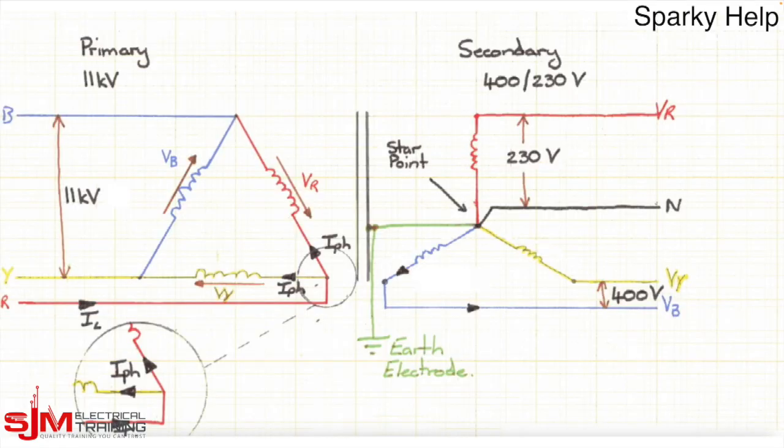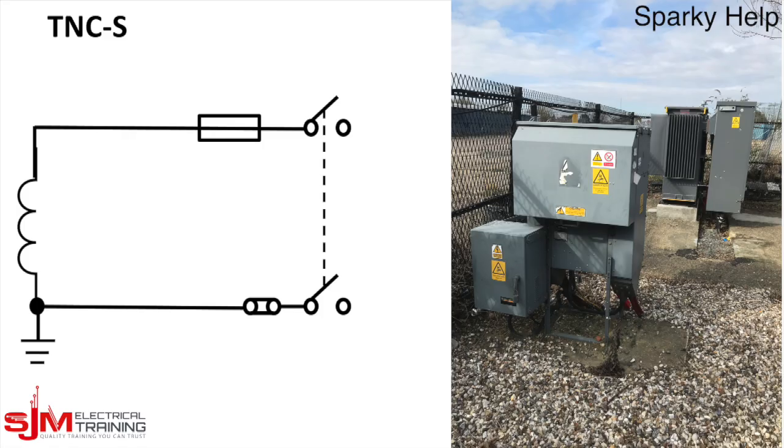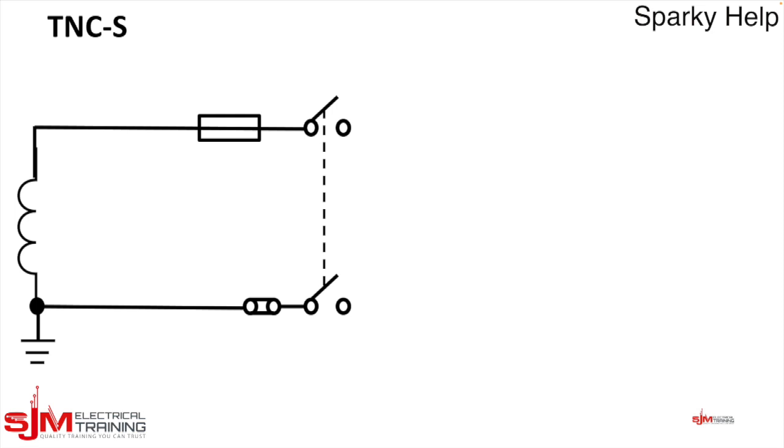So this what we have on the screen so far is the delta star distribution transformer and this is the secondary winding. It would normally be three phase but I've just drawn it as single phase. This is the secondary side from the winding through to the incoming supply, the main switch within the property.